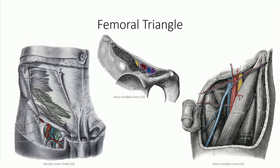Before we can discuss the neurovascular supply to the lower limb, we need to identify their axis point. In the arm, that was the axillary space. In the case of the lower limb, we have the femoral triangle, so named for its three boundaries: the sartorius laterally, the adductor longus and pectineus medially, and the inguinal ligament superiorly, which also forms a bridge under which the neurovascular structures pass between the lower limb and abdominal pelvic cavity. The contents of the triangle, from lateral to medial, are the femoral nerve, femoral artery, femoral vein, and the lymphatics separated by an empty space. The mnemonic NAVEL — Nerve, Artery, Vein, Empty, Lymphatics — is often used to remember this association.